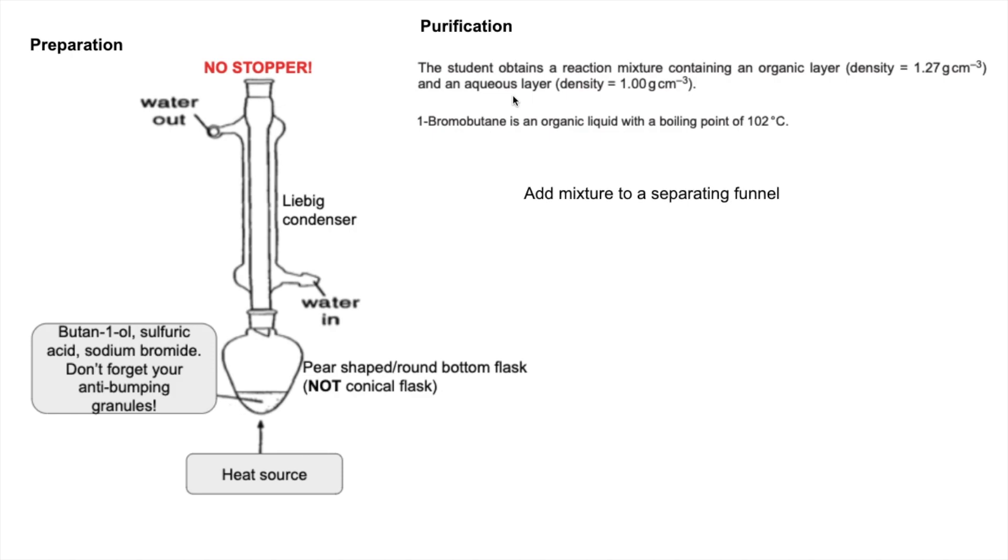How are we going to separate the 1-bromobutane from the aqueous layer? We're going to put it into a separating funnel. With the organic layer having a higher density than water, it's going to sink to the bottom. So we need to collect the lower organic layer.